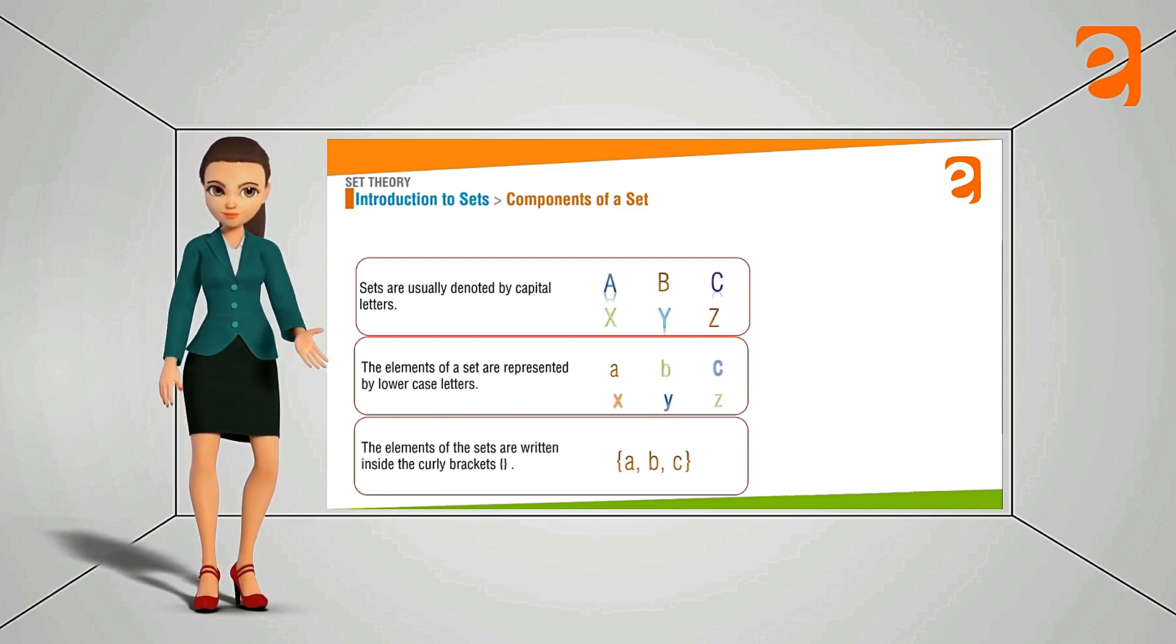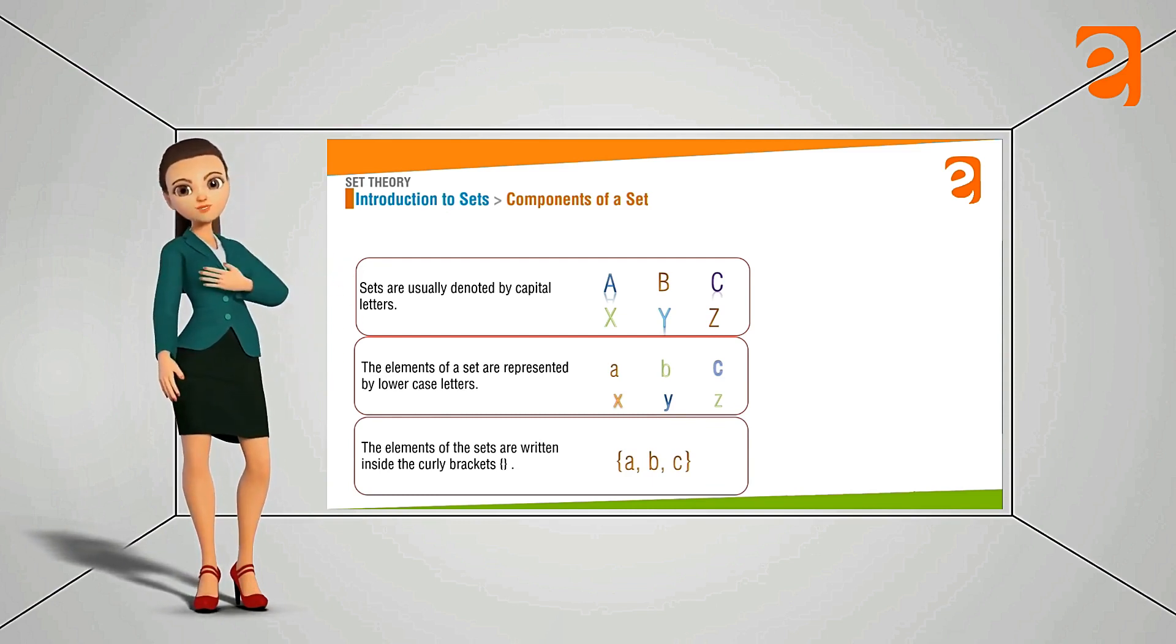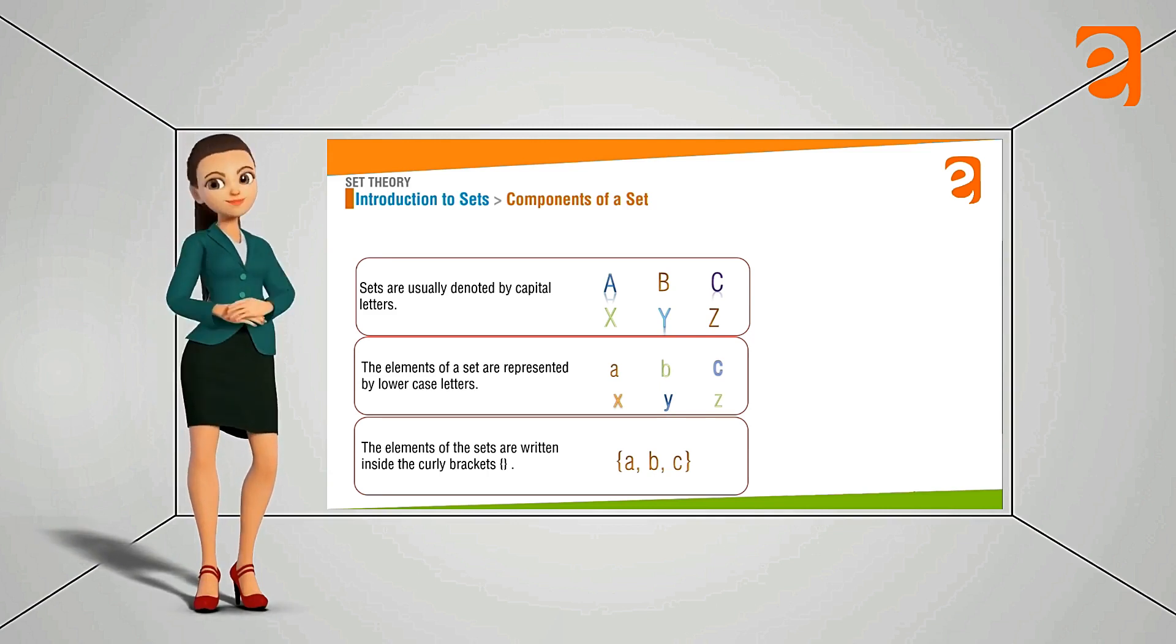And these elements are written inside the curly brackets. So the set is denoted by capital letter A. So we can say that A is equals to inside the curly brackets A, B, C. A, B, C are the elements of the set and capital A is the name of the set.